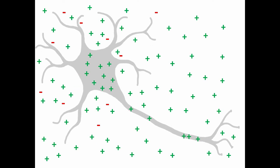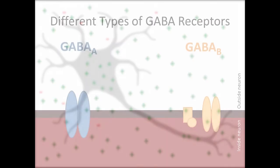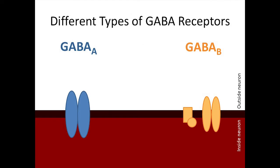This is how GABA works to inhibit neurons from firing action potentials. It makes it harder for the neuron to reach the threshold of internal positive charges required to trigger the action potential. When a presynaptic neuron releases GABA, it will bind with a GABA receptor on the postsynaptic neuron and inhibit it from firing an action potential.